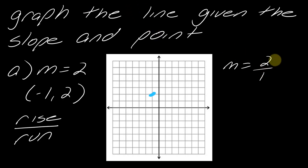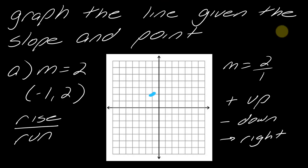If the slope is positive, you go up; if it's negative, you go down — but you always turn right. So starting from this point, I go up two because it's positive, and then I go to the right one.